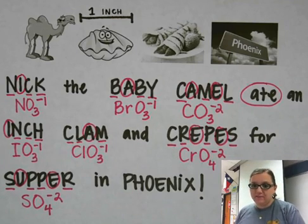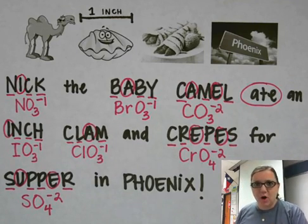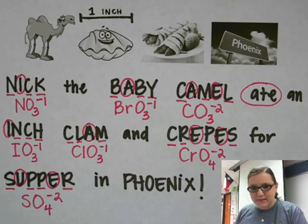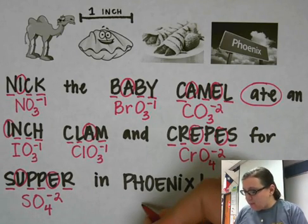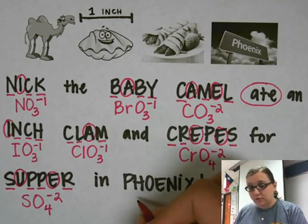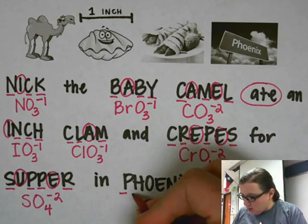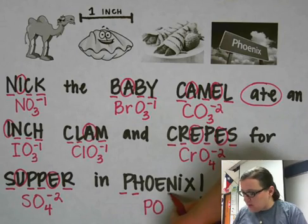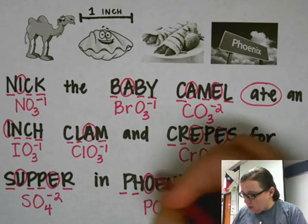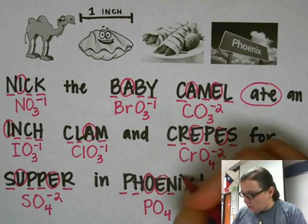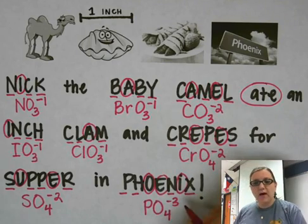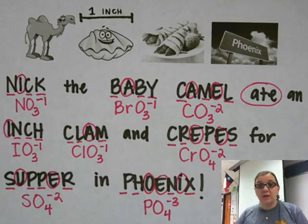And finally, 'Phoenix' stands for phosphate — which starts with phosphorus — and we have oxygens. We have four oxygens for the four consonants, and three vowels for a charge of negative three.